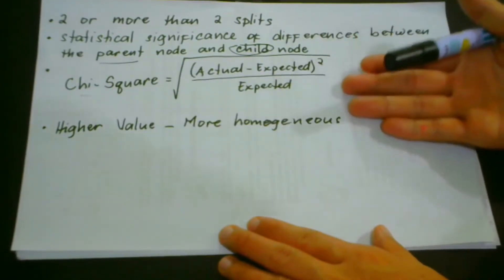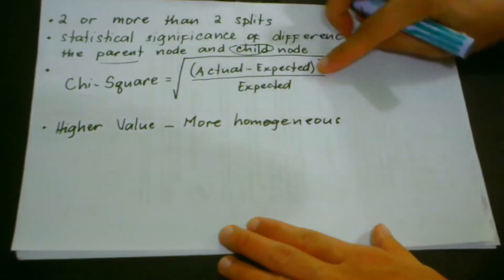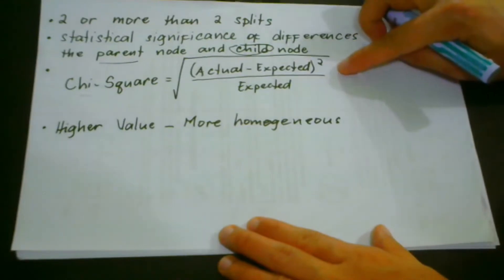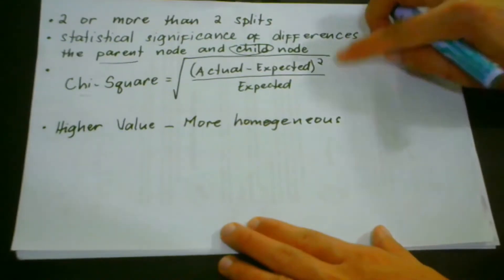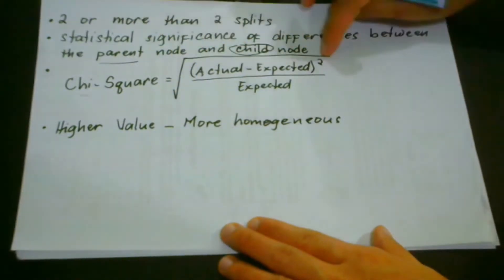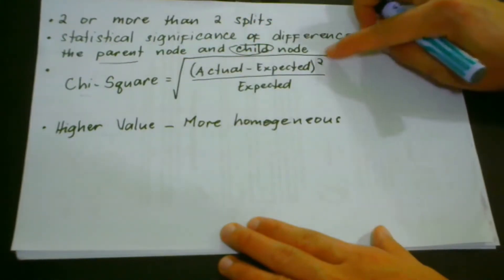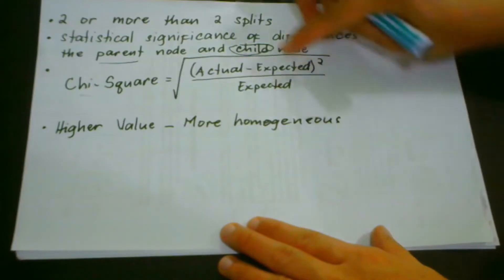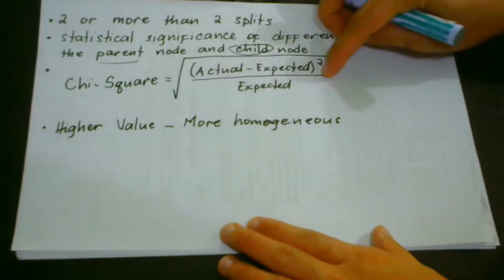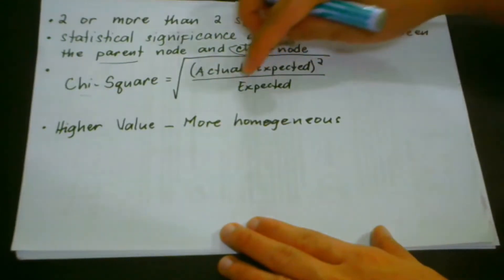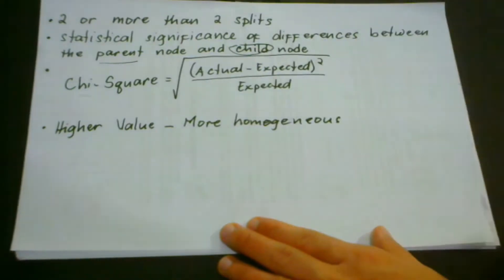This is actually very simple. As you can see here, we have this formula to use for this calculation. We have the square root of the actual value minus the expected value, and of course we're going to square that, and we're going to divide this by the expected value.